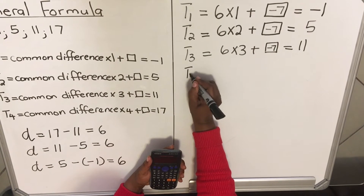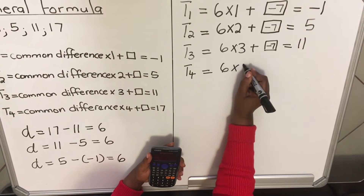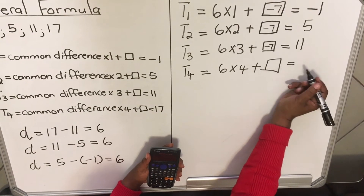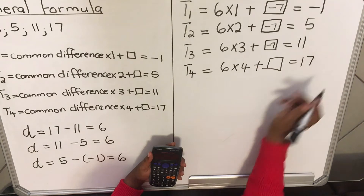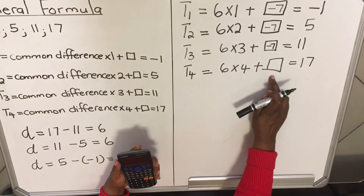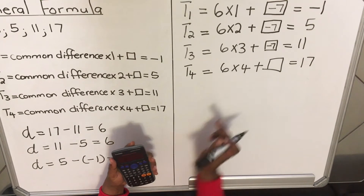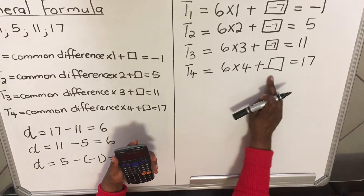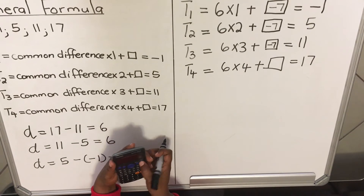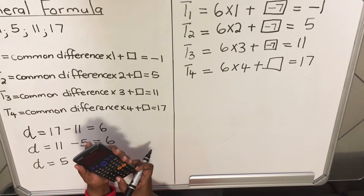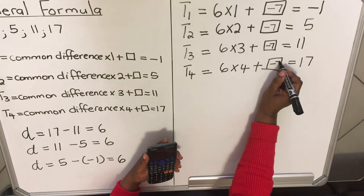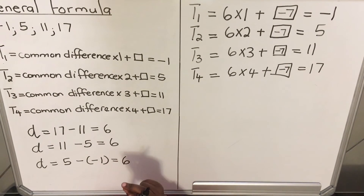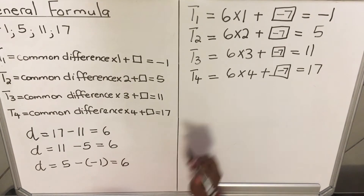Term 4 equals 6 times 4 plus a particular number, and my Term 4 is 17. So 6 times 4 is 24; to find the number: 17 minus 24 gives minus 7. We get minus 7 every time.